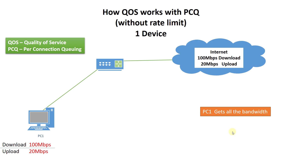Before I continue I'm going to explain what QoS is. QoS stands for Quality of Service and what it does is it ensures that all the devices in your network get some of the bandwidth that is available, so no one device can actually use all the bandwidth while other PCs may be unable to browse.